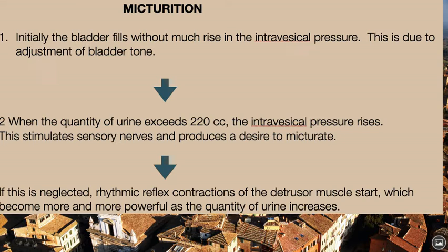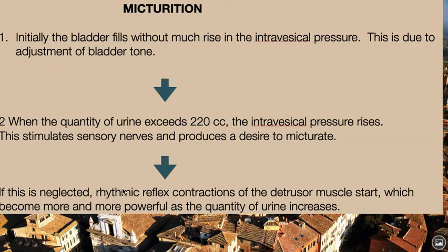Now, an overview of micturition and how it occurs. Initially, the bladder fills without much rise in intravesical pressure due to adjustment of bladder tone. When the quantity of urine exceeds 220 cc, the intravesical pressure rises, stimulating sensory nerves and producing a desire to micturate. If this is neglected, rhythmic reflex contractions of the detrusor muscles start, becoming more powerful as the quantity of urine increases.